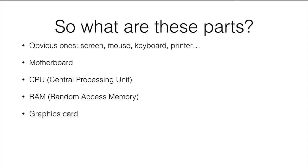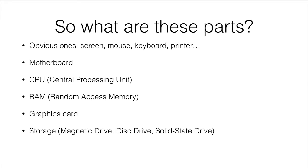Then you have the graphics card, which is essentially like another computer inside your computer. The graphics card deals with images, video, and displaying things on the screen. Then you have storage — such as your magnetic drive, which aren't used that much anymore; disk drives, which are going out of fashion pretty quickly; and solid state drives, which are a form of permanent storage. And finally we have buses, which are the wires that connect components together and let them send information to one another.